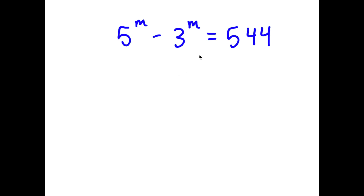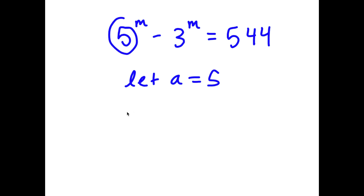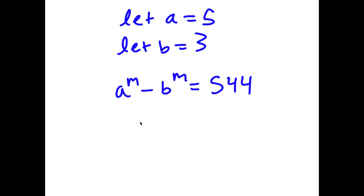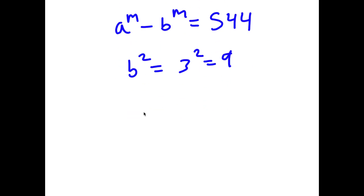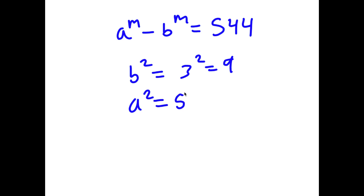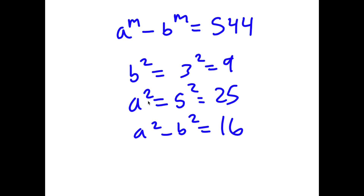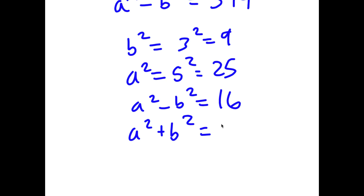So in this problem, I have 5 to the power of m minus 3 to the power of m is equal to 544. I'm first going to let a equal 5 and let b equal 3. So now I have a to the power of m minus b to the power of m is equal to 544. This means b squared equals 3 squared, which is 9, and a squared equals 5 squared, which is 25. So a squared minus b squared equals 25 minus 9, which is 16. And a squared plus b squared, which is 25 plus 9, is 34.